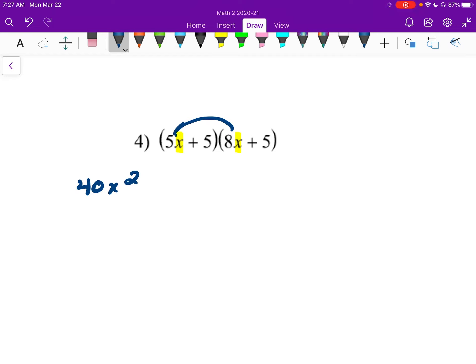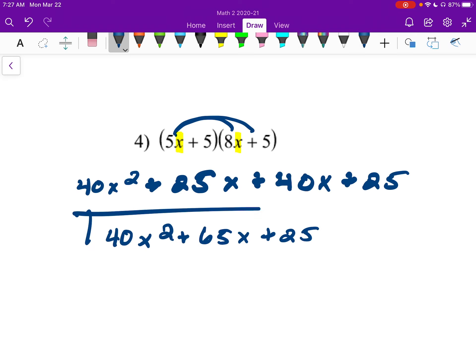Next up, I have 25x plus another 40x, and then plus 25. Combining like terms, I get 40x squared plus 65x plus 25. And that's that.